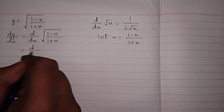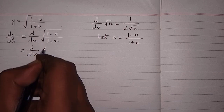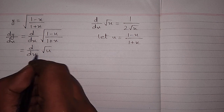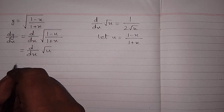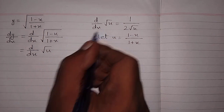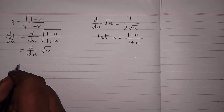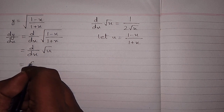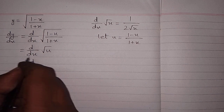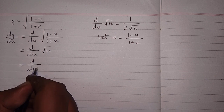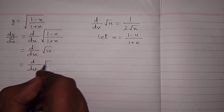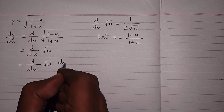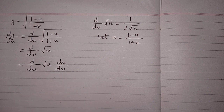This will become d/dx of √u, but again these two variables are not the same, so we cannot apply that formula. So we will apply the chain rule of differentiation and replace dx by du, so that we can differentiate √u and multiply it by du/dx.